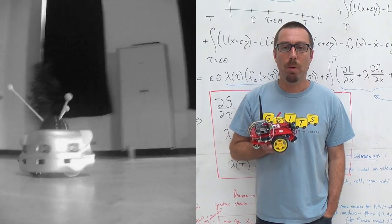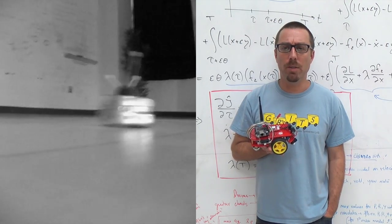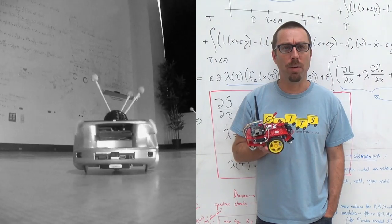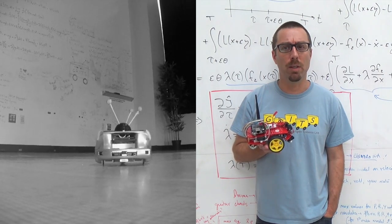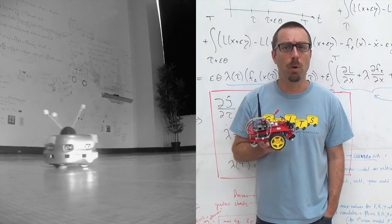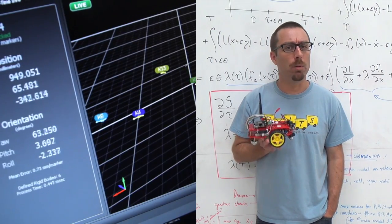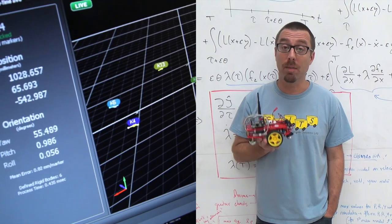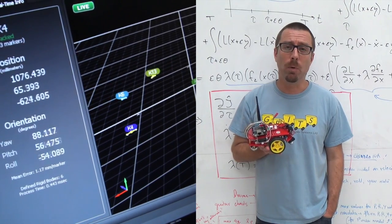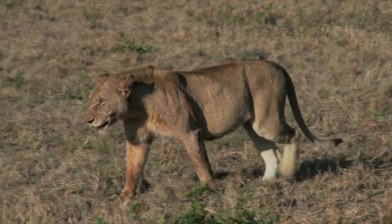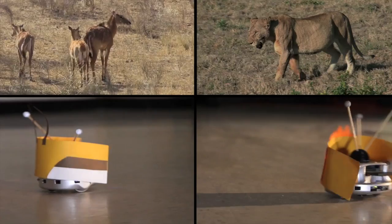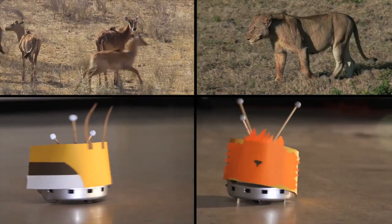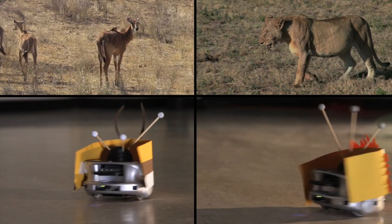By drawing inspiration from the world around us, control theory holds the key to making robot teams useful and amazing things. It is what allows us to go from science fiction to science fact.